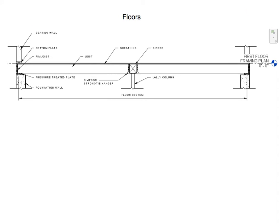Here we have a floor system with bearing walls, a plate right underneath the bearing wall, and our sheathing. The sheathing transfers weight to the floor joist. The floor joist transfers loads to the hangers, the hangers to the girders, and the girders to the lally columns. The other side goes from the joist to the pressure treated plate, and the rim joist keeps the joists intact. Eventually all loads make their way to the foundation.